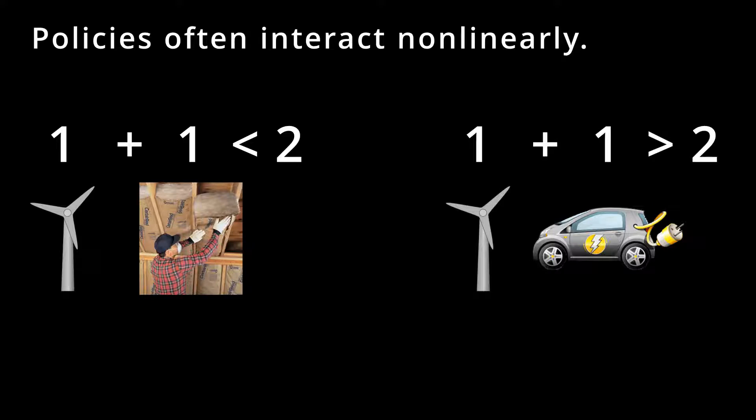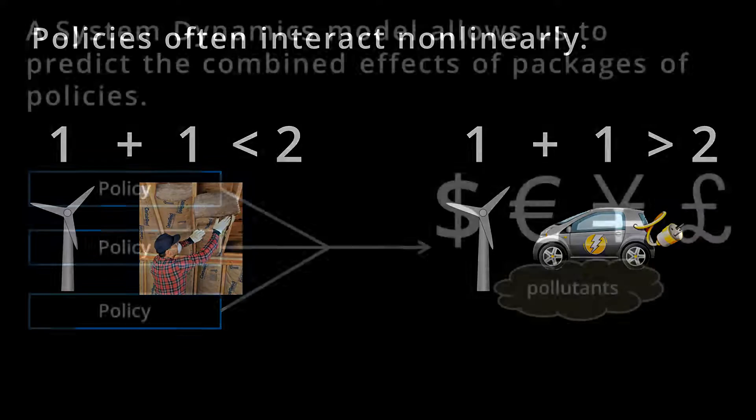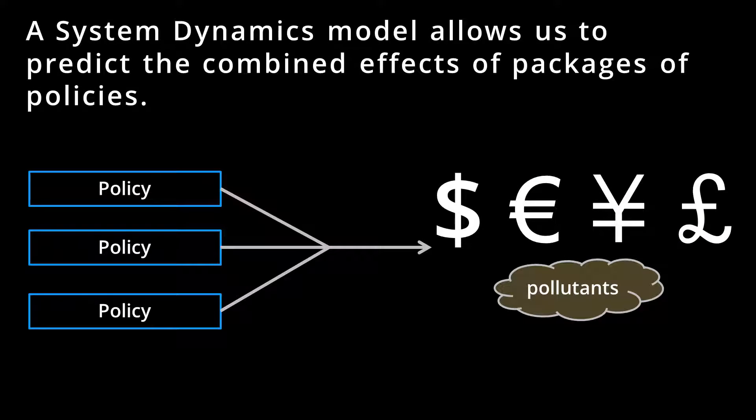The opposite relationship can also occur. For example, a policy that promotes electric vehicles becomes more effective at reducing emissions when the electric grid is more decarbonized. When you are dealing with dozens or hundreds of interacting policies, you need a computer model to understand their combined effects.